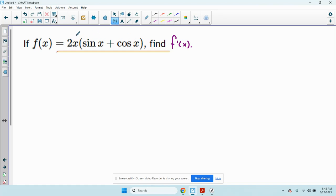So there's a number of ways you can do this. You could distribute the 2x and then find the derivative of each term using the product rule. That might be more work than it's worth. So I have two things being multiplied: I have 2x being multiplied by sine x plus cosine x. So I'm going to use the product rule.